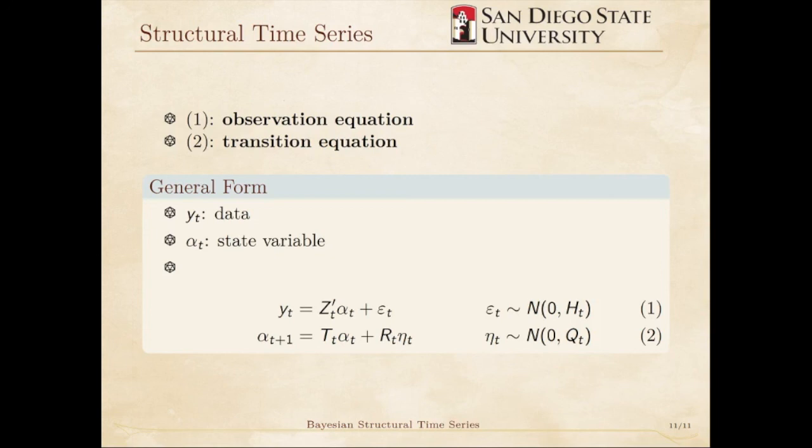Here, YT is the data, just like the previous models. But now, we use AlphaT to denote the state variable. AlphaT can include a level, trend, seasonal, or regression component. We can include or exclude these components as we see fit. For example, if we want a local level model, then AlphaT is the same as what we called MuT in the local level model equations.